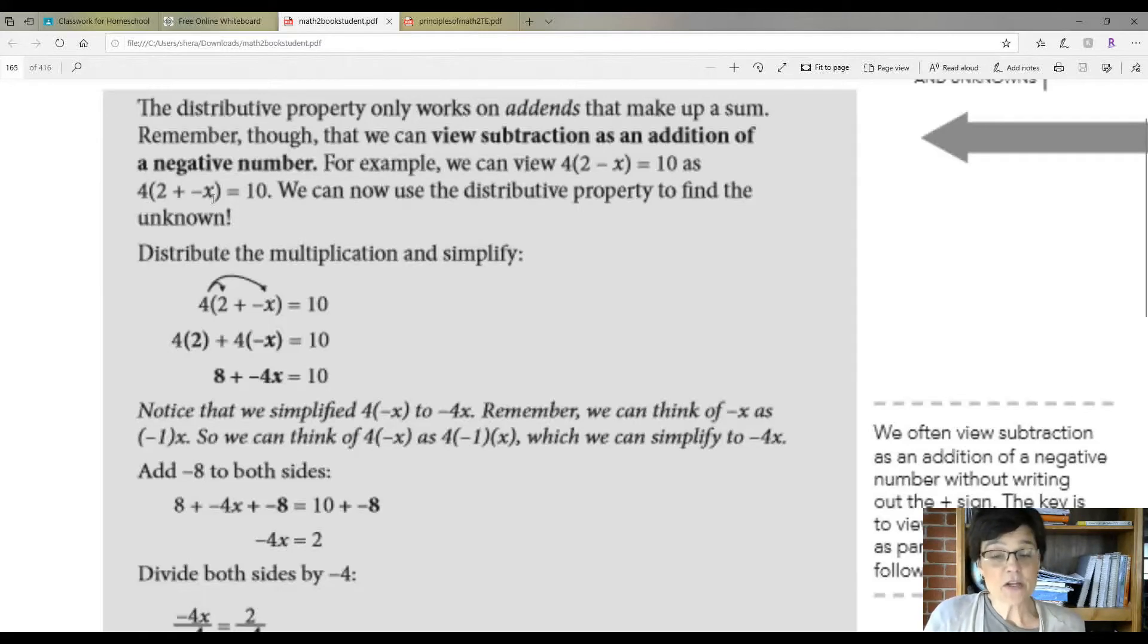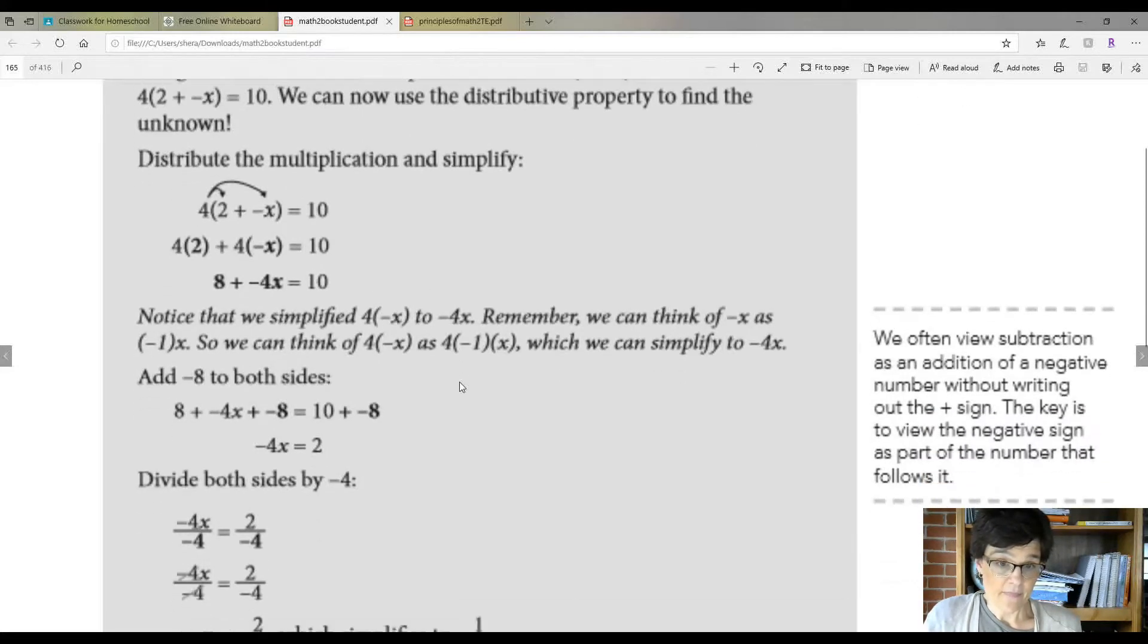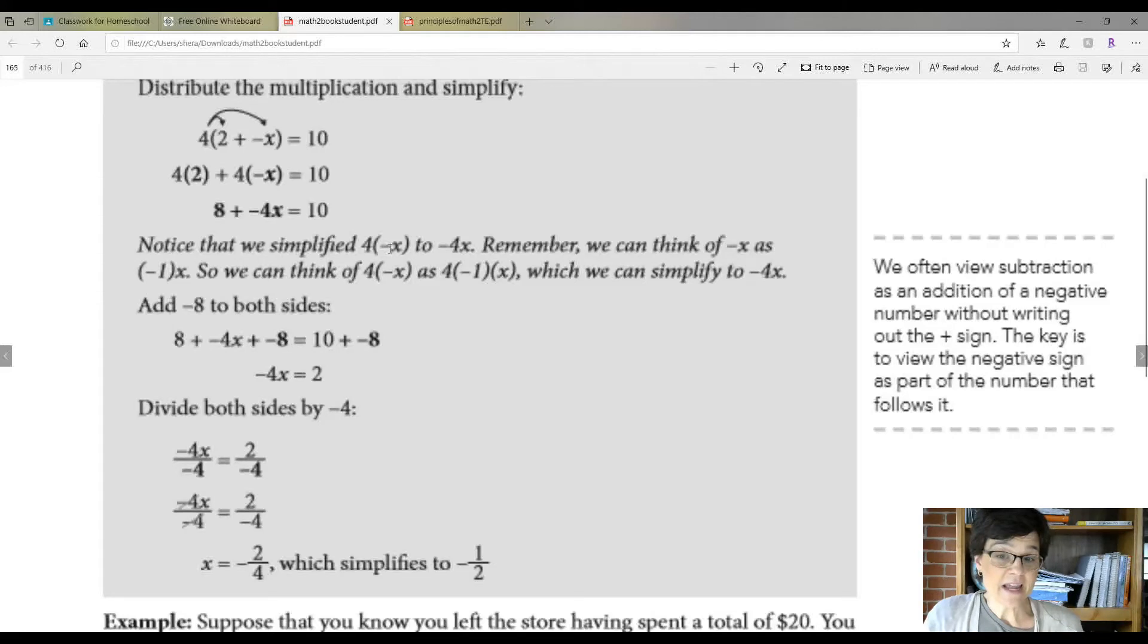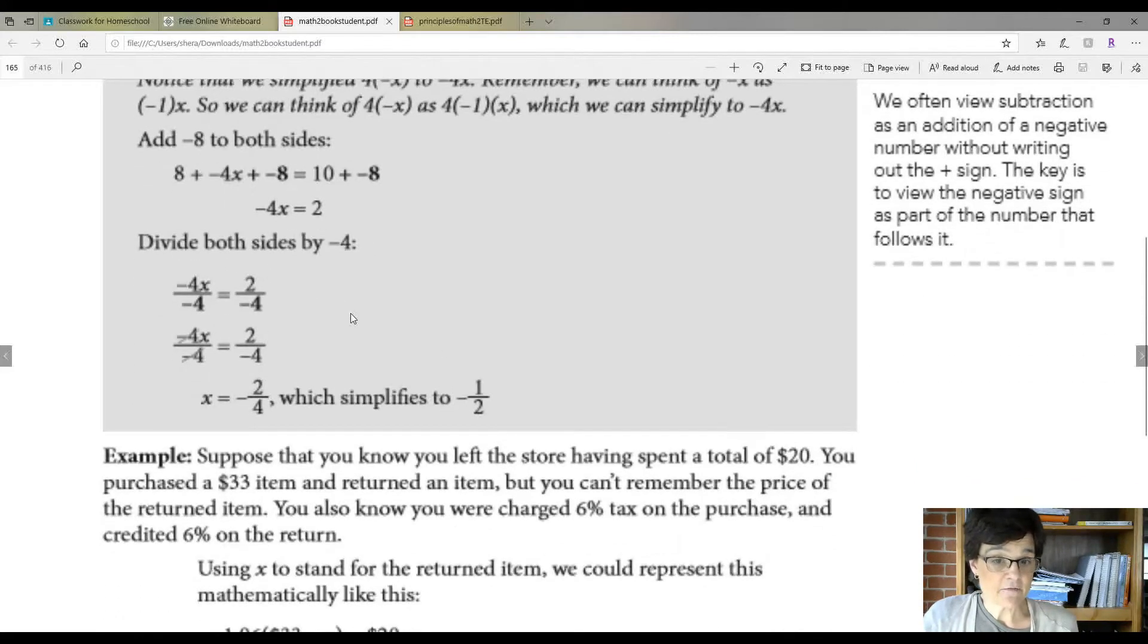Now you can use the distributive property to find it. So 4 times 2 is 8 plus 4 times negative X is negative 4X equals 10. Notice that we simplified 4 times negative X to just simply this. Remember, you can think of negative X as negative 1X. So you can think of 4 times negative X as 4 times negative 1X, which you simplify to this here. Add negative 8 to both sides so that we get rid of the 8 and we're left with negative 4X equals 2. Divide both sides by negative 4. When you do all the calculations, you get it down to negative 2 fourths, which simplifies to negative half.